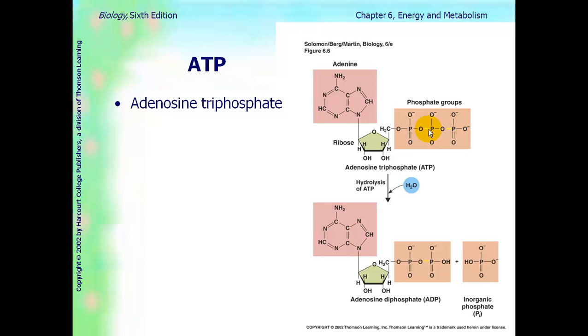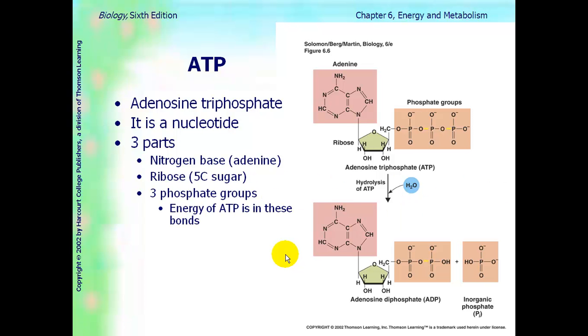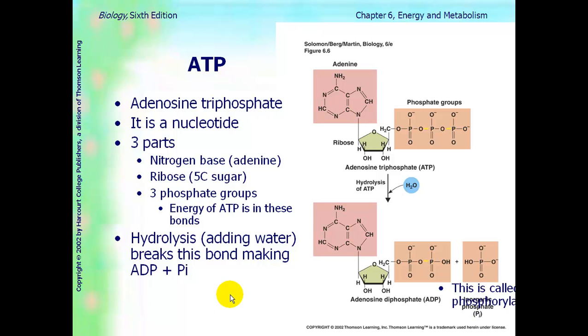These yellow bonds here are representing high-energy bonds. So during a hydrolysis reaction, this bond will break right here. The inorganic phosphate group will come off, and energy will be released in the cell. ATP is a nucleotide. The three parts, again, are nitrogen base, which is called adenine, a five-carbon sugar called ribose, and then you have your three phosphate groups where the energy is in those bonds. Hydrolysis, adding water, will break the bonds of ATP, releasing energy for the cell. As a result, we end up with adenosine diphosphate, meaning only two phosphates now instead of three, and an inorganic phosphate is released as well. That process is called phosphorylation.